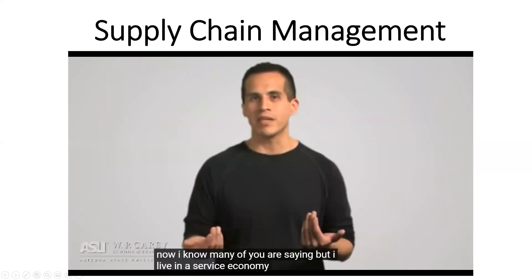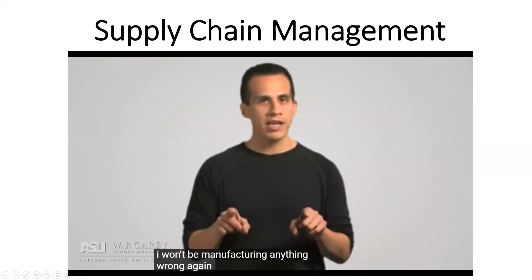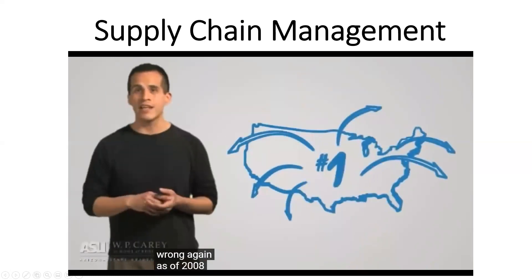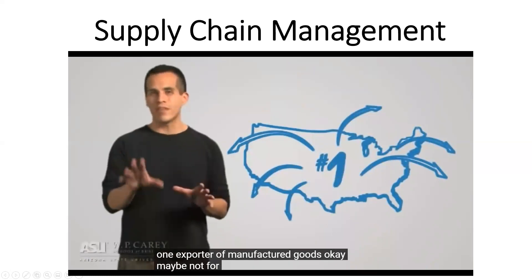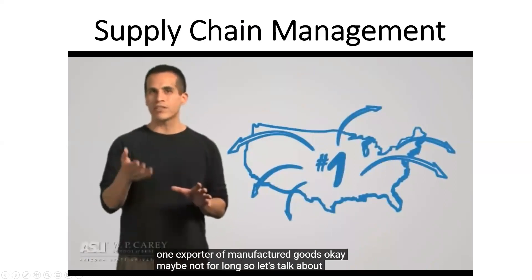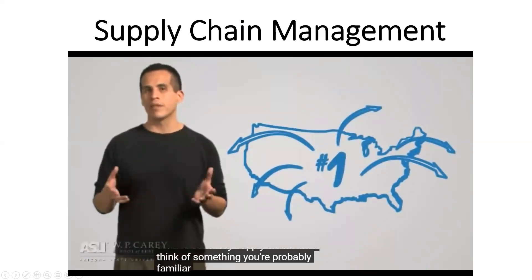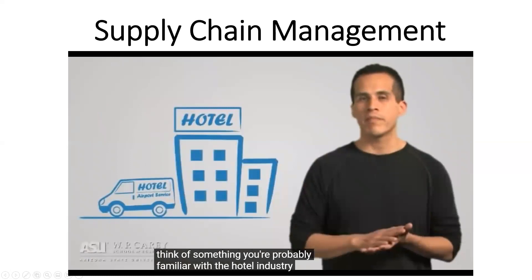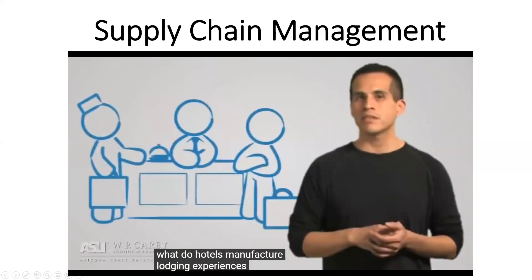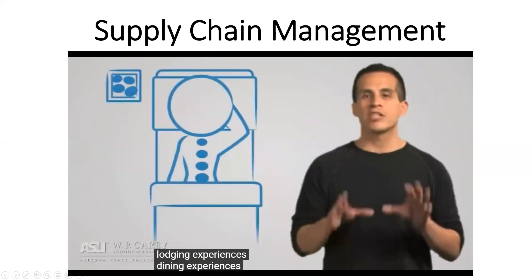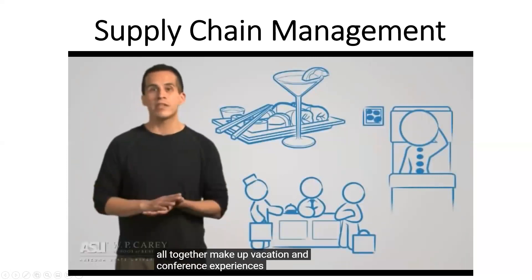Many of you might say, 'But I live in a service economy — I won't be manufacturing anything.' Wrong. As of 2008, the US was still the number one exporter of manufactured goods. So let's talk about service economy supply chains. Let's think of something you're probably familiar with — the hotel industry. What do hotels manufacture? Lodging experiences, dining experiences, spa experiences, which all together make up vacation and conference experiences.